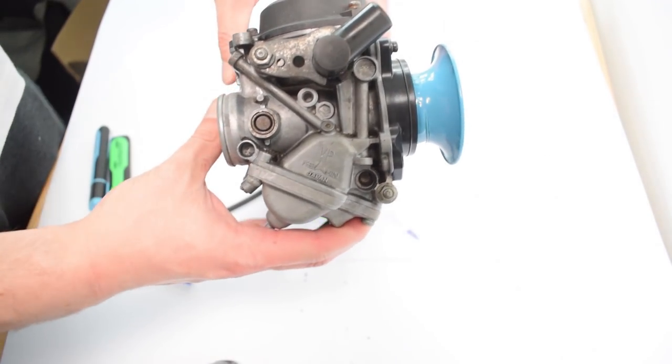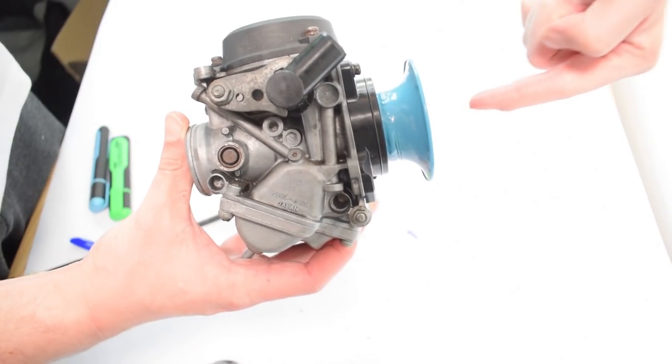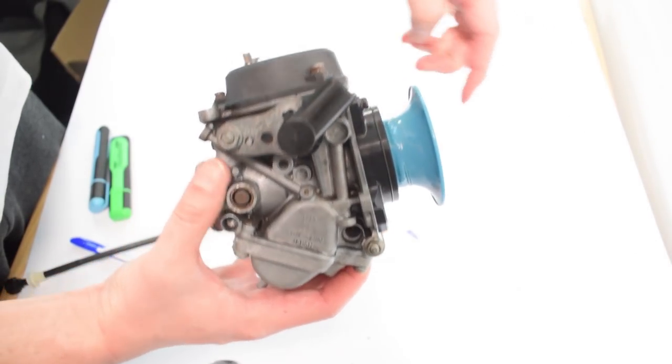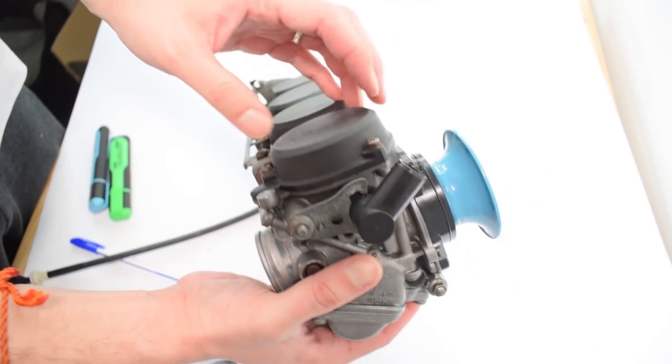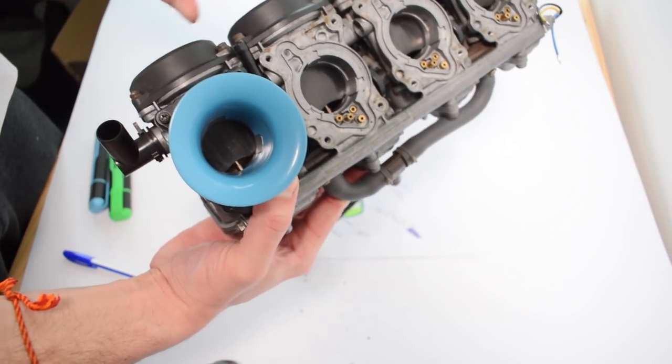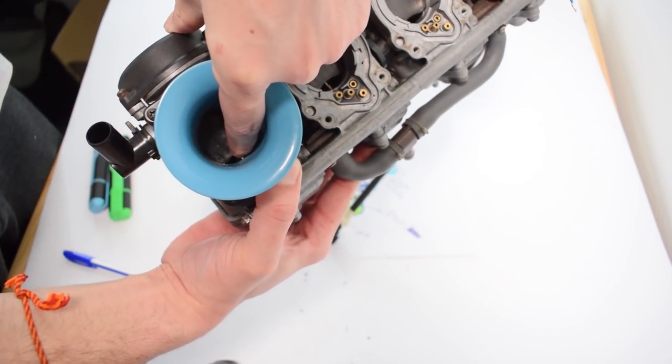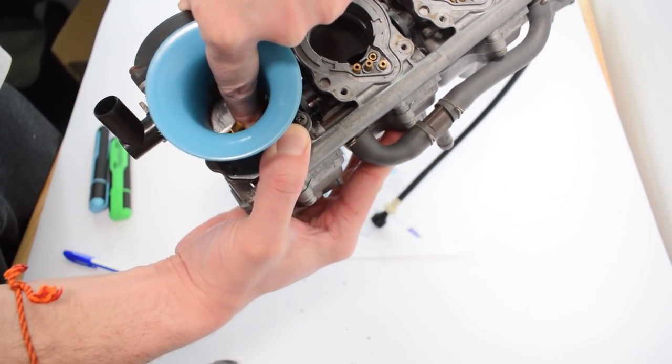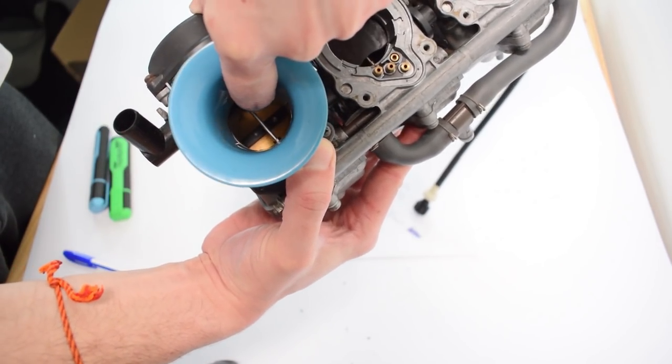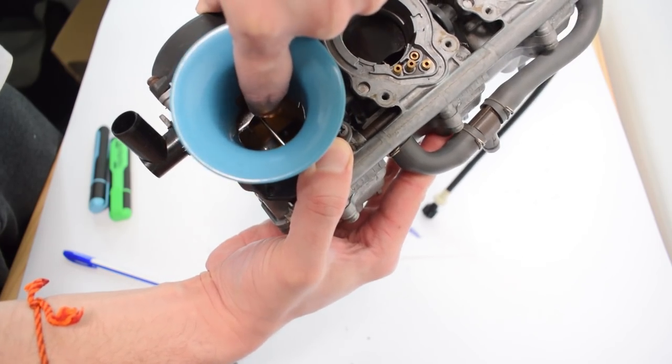So here we have the real deal. As I said our air comes in from here. Up here in this part is our diaphragm and our spring, and inside here we can see our slide and there is right there is that needle I've been talking about.